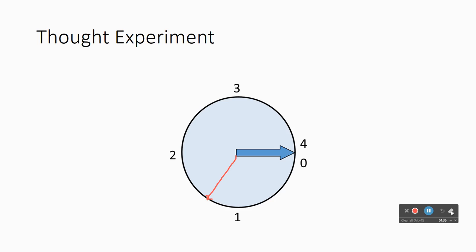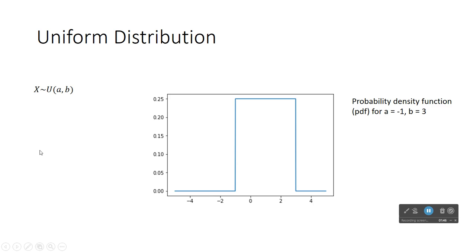So that's what we're talking about with this thought experiment, that this arrow coming around and with no preference at all stopping on a particular point. That is an example of the uniform distribution.